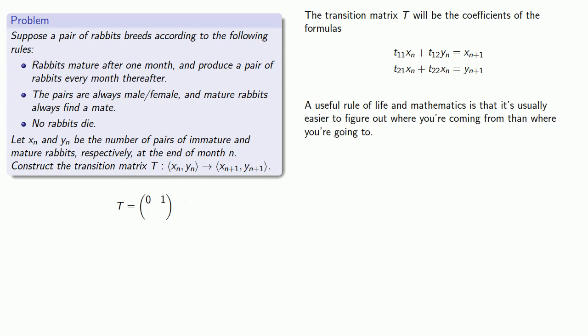And these coefficients will give us the first row of our transition matrix. Similarly, yn plus 1 is the number of mature rabbits at the end of month n plus 1. And these rabbits come from two sources. First of all, the mature rabbits at the end of month n are still alive. We've assumed that no rabbits die. So that's yn rabbits.